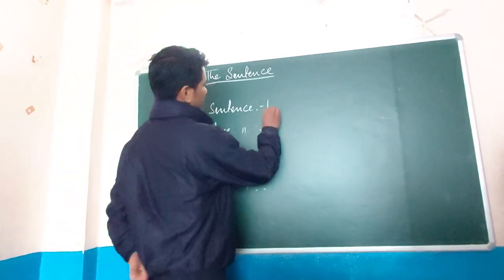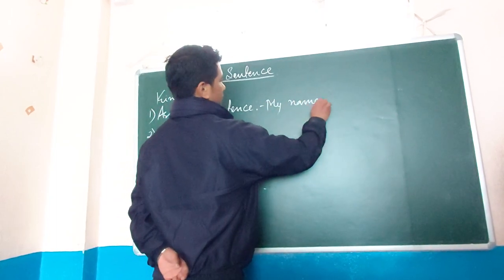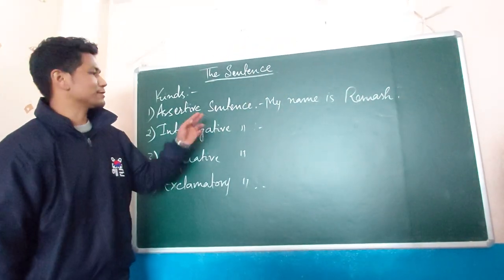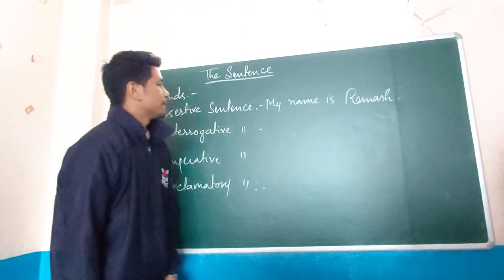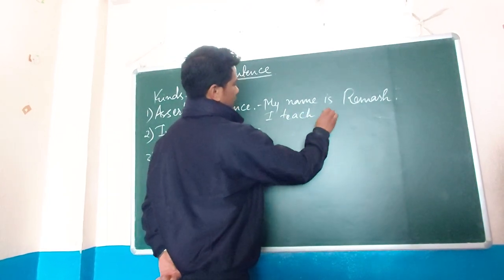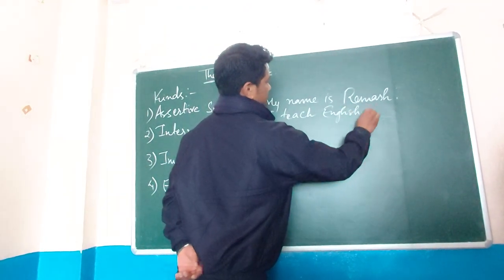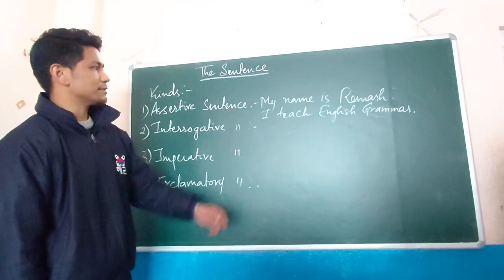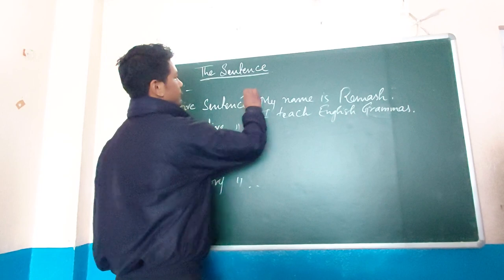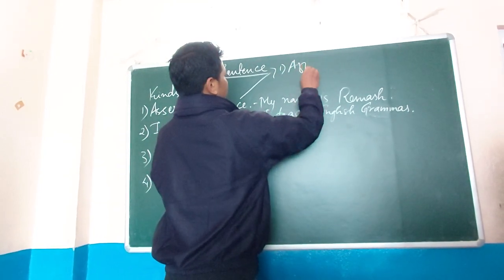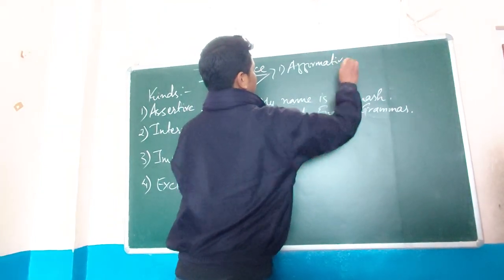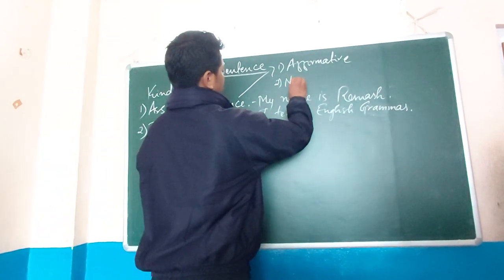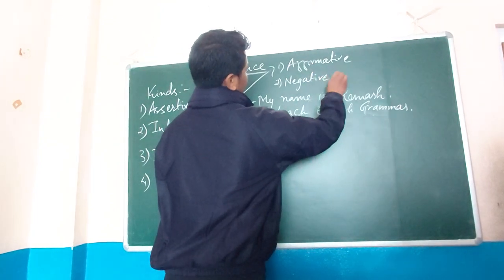For example: 'My name is Ramesh' — that is an assertive sentence; I am declaring my name. Another example: 'I teach English grammar' — this is also an assertive sentence. Now assertive sentences are divided into two parts: number one is affirmative or positive, and number two is negative.